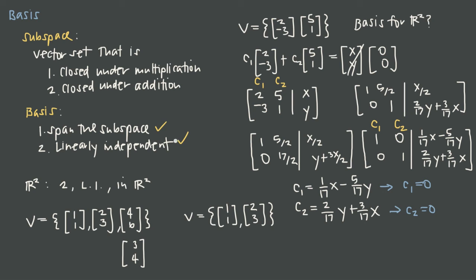Therefore, because we've shown that [2,-3] and [5,1] span the subspace R2 and are linearly independent, these two vectors form a basis for R2. That's how you determine whether a vector set forms a basis for a space. Importantly, we've already seen the standard basis vectors I=[1,0] and J=[0,1], but these are just one choice — any two linearly independent vectors in R2 can form a basis for R2.